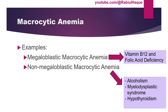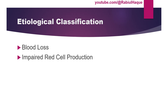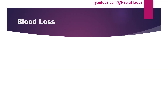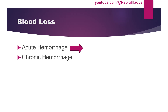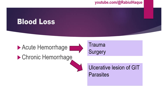We can also classify anemia according to etiology. Etiological classification includes: blood loss, impaired red cell production, and excessive red cell destruction. Causes of blood loss include both acute and chronic hemorrhage. Acute hemorrhage can occur during surgery or following trauma. Chronic hemorrhage can occur in ulcerative lesions of the gastrointestinal tract, or due to certain parasites such as hookworm (Ankylostoma duodenale) and other parasites that cause chronic blood loss.